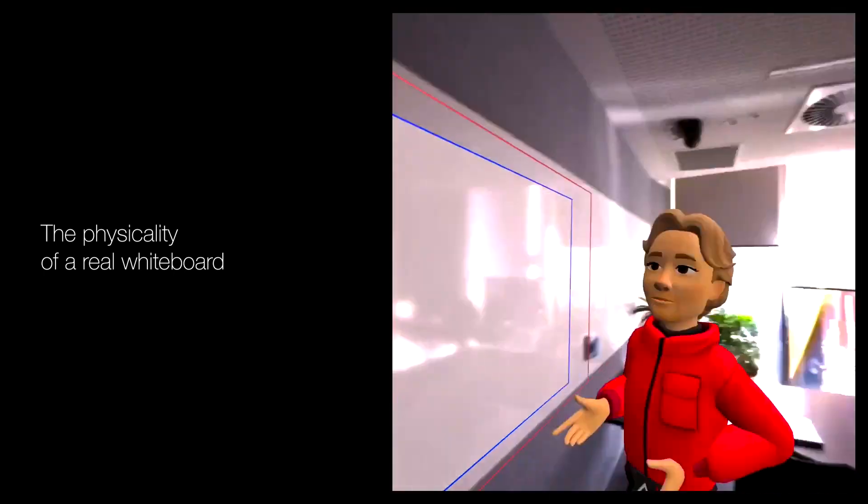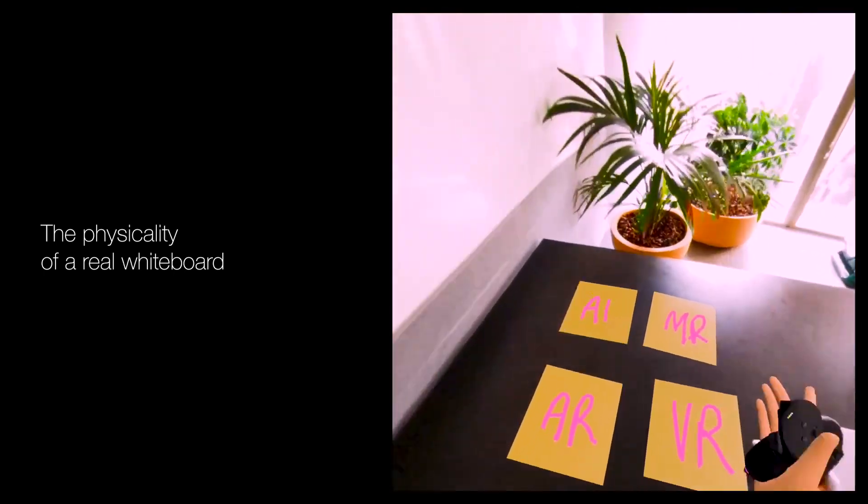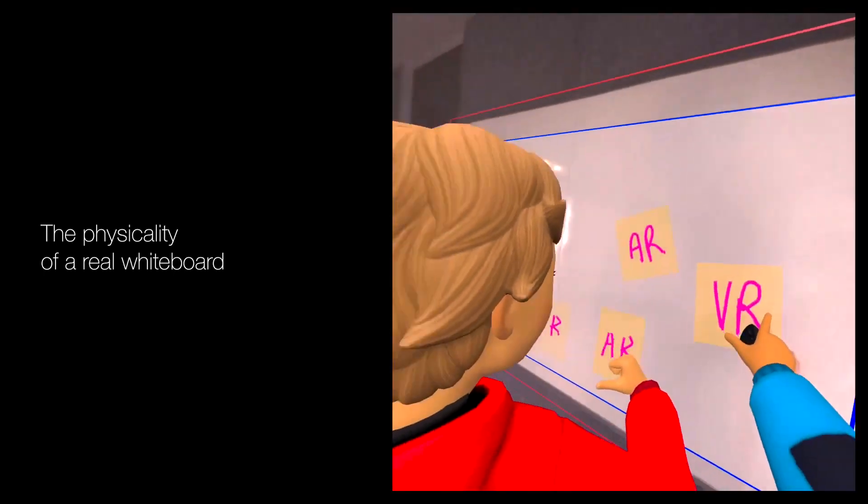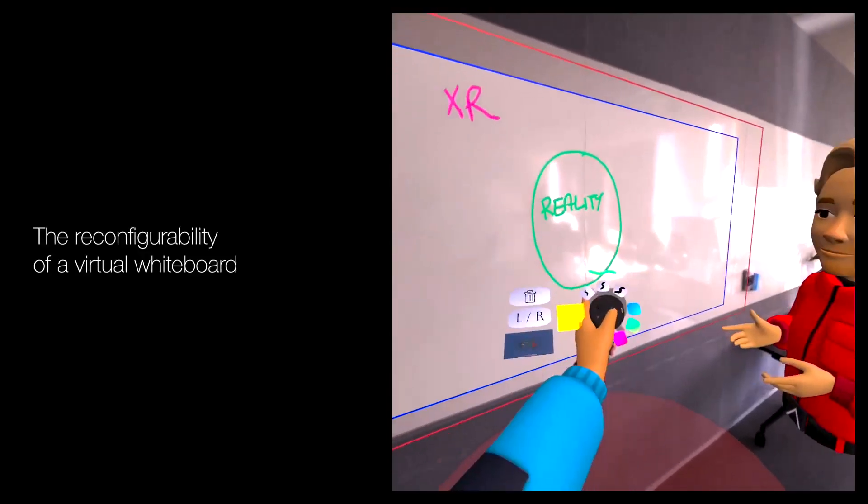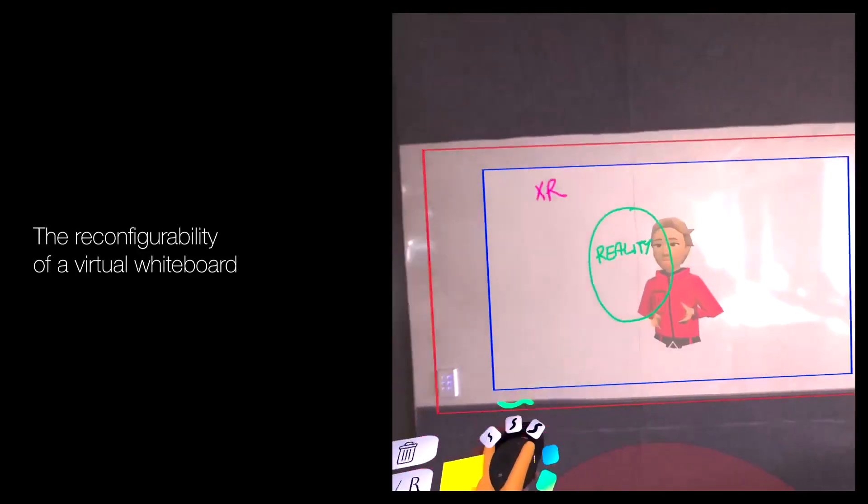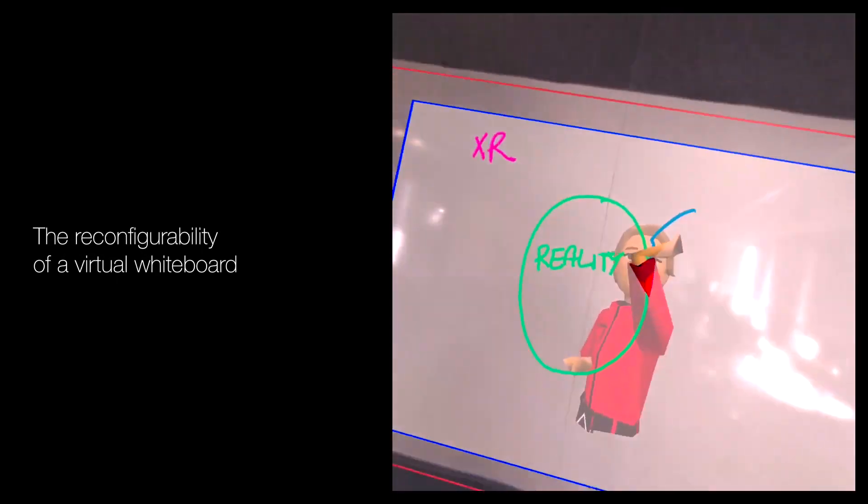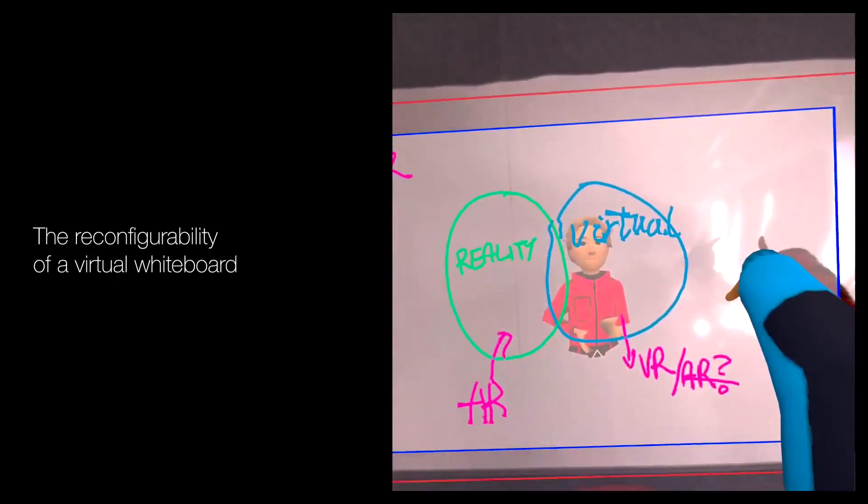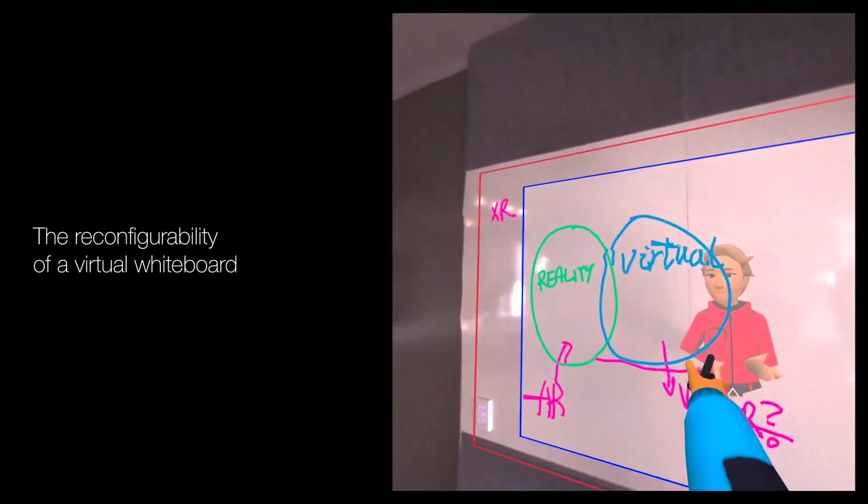To address this tension, we introduce Blended Whiteboard. Blended Whiteboard supports a unique collaboration style where users can interact with the physical whiteboard while together as virtual avatars. They can also reconfigure the blended space by changing the avatar orientation and spacing or panning and zooming the whiteboard content, all without losing the physical frame of reference.